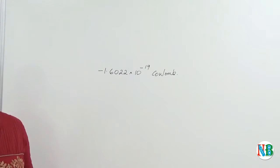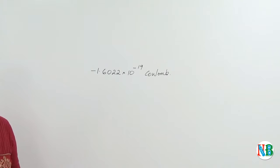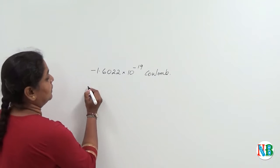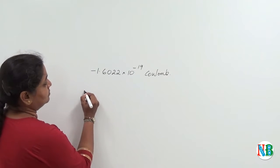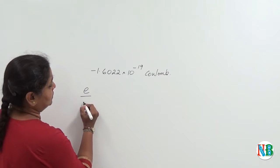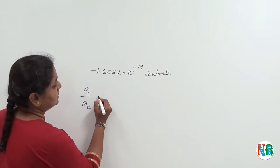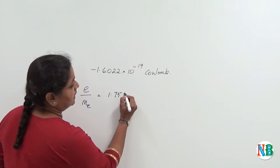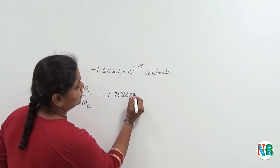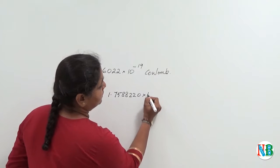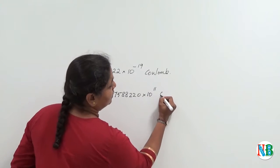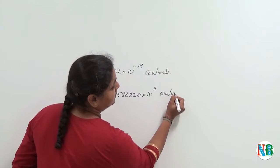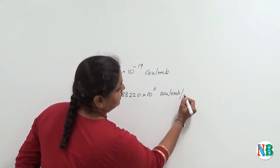Now, we already know that J.J. Thomson found the ratio of the charge to the mass is equal to 1.758820 into 10 to the power of 11 coulombs per kg.